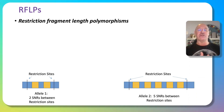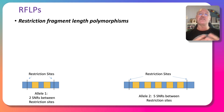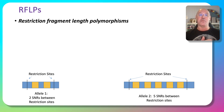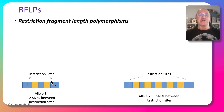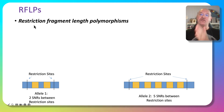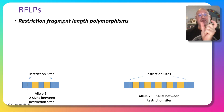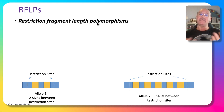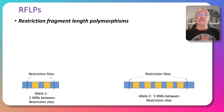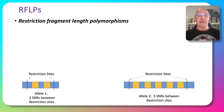This comes down to the concept called RFLP — Restriction Fragment Length Polymorphism. 'Restriction' refers to using a restriction enzyme to chop up the DNA. 'Fragment' refers to a fragment of DNA and its length. 'Poly' means many, and 'morph' means form — so many different forms.